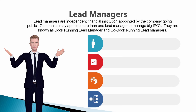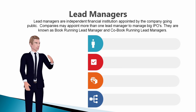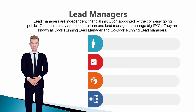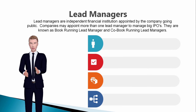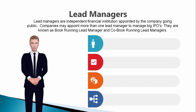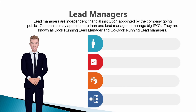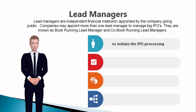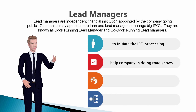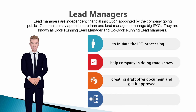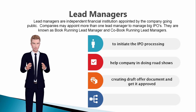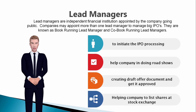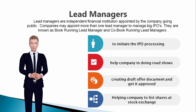Then comes lead managers. They are independent financial institutions appointed by the company going public. Companies may appoint more than one lead manager to manage big IPOs. They are known as book-running lead manager and co-book-running lead managers. Their main responsibilities include initiating the IPO processing, helping the company in doing roadshows, creating draft offer documents and getting them approved by SEBI and stock exchanges, and helping the company to list shares at the stock market.